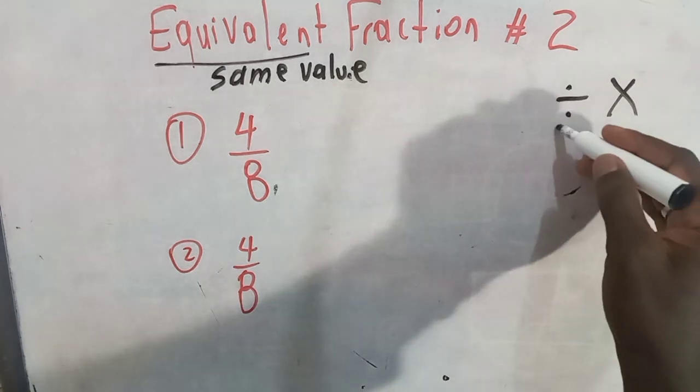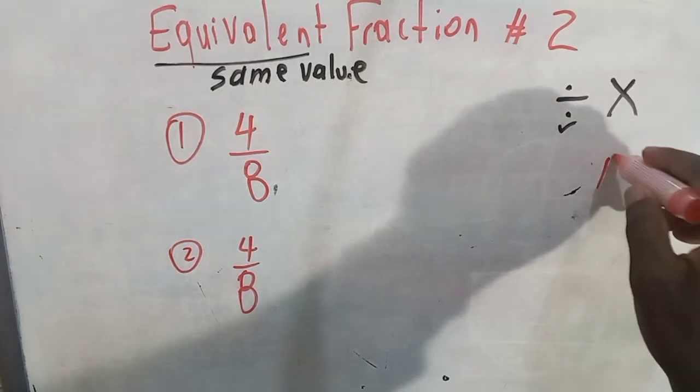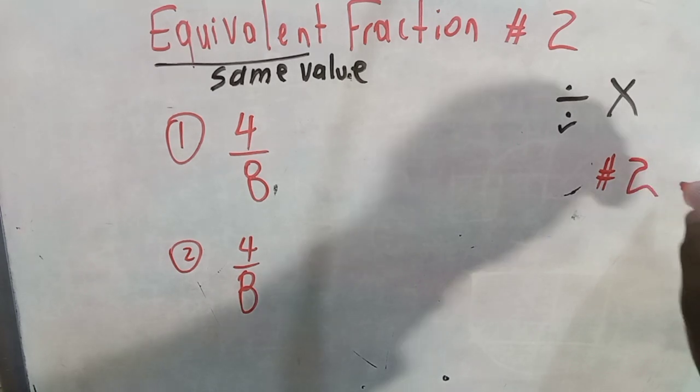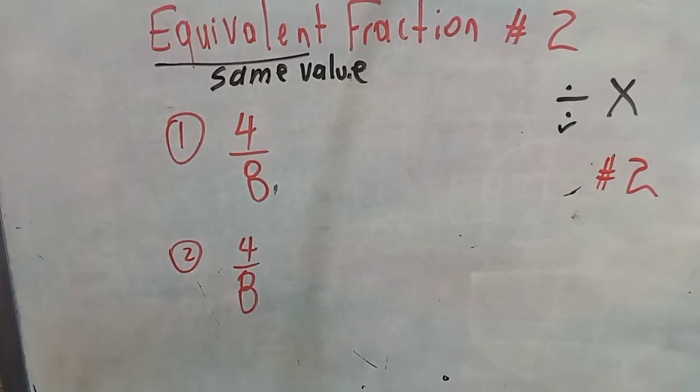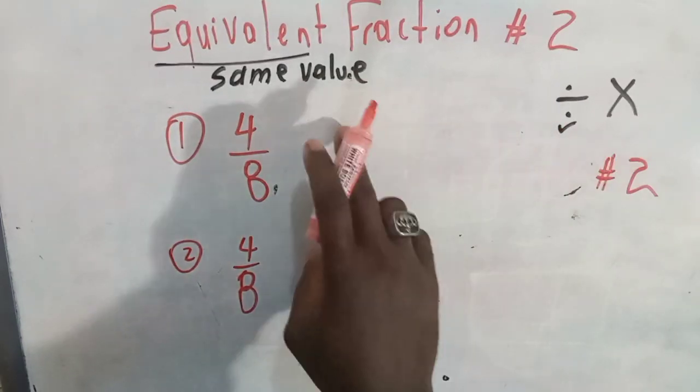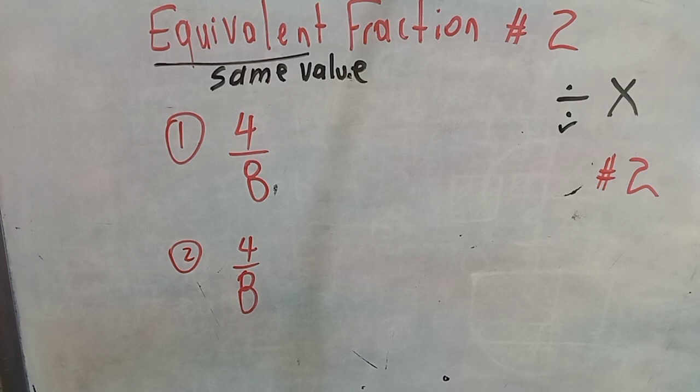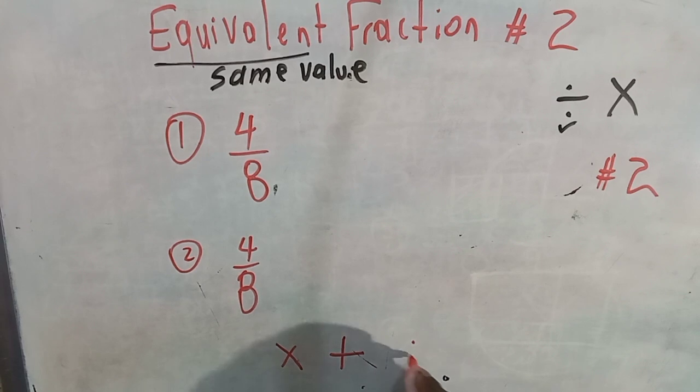Let us use division first. For example, let us use the numeral two to find the equivalent fraction using both operations, division and multiplication. Remember there are four operations in mathematics: multiplication, addition, division, and subtraction.